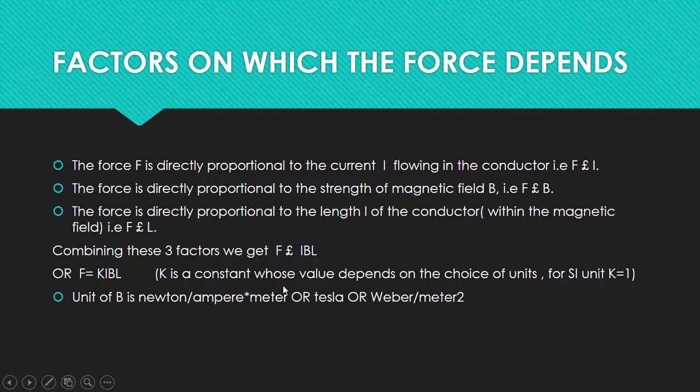K is a constant whose value depends upon the choice of units. For SI units, K equals 1. So what can we write? F equals I·B·L, right? Considering K is 1.